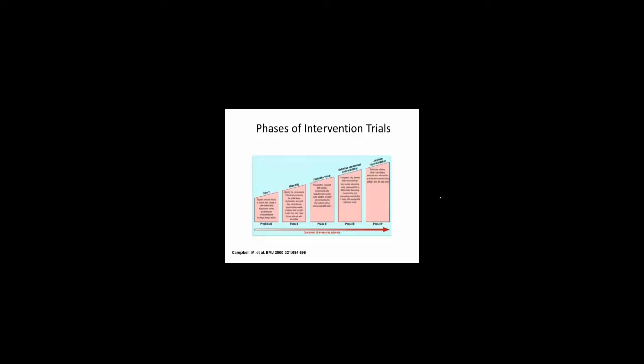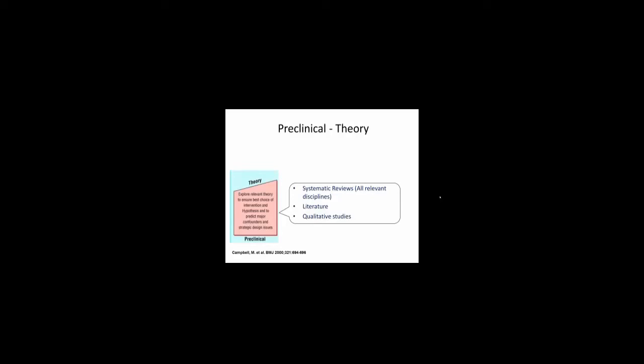I want to talk a little bit about the phases of intervention trials. There are about five phases of trial development, and I'm going to go over the first four. The long-term implementation phase four is not really closely related to pilot studies, so I'm not going to talk a lot about that. When you are thinking about developing a research project, the first types of studies are the preclinical or theory trials — ones that are really preparing the theoretical background and mindset you need to do a larger study.